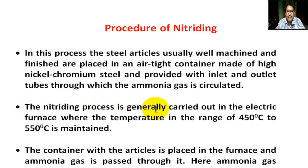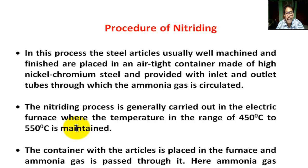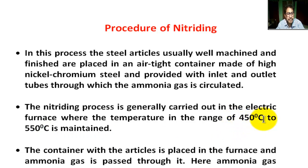The container is provided with inlet and outlet tubes through which the ammonia gas is circulated. The nitriding process is generally carried out in an electric furnace where the temperature in the range of 450 degrees centigrade to 550 degrees centigrade is maintained.